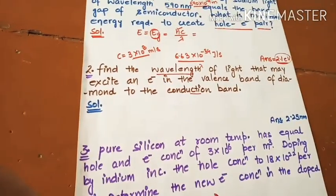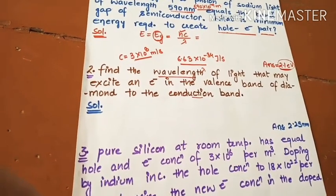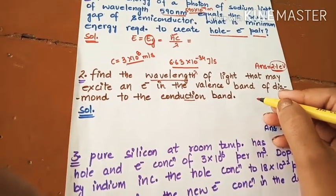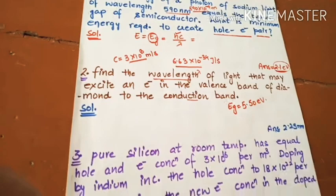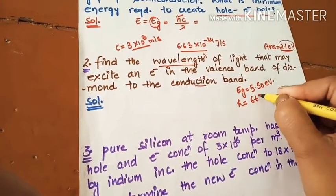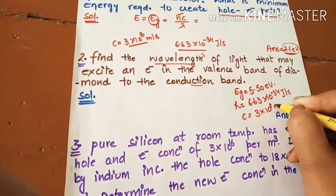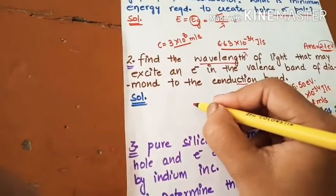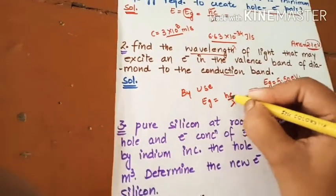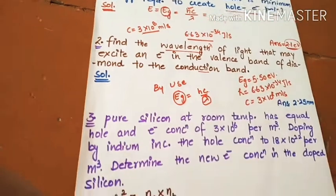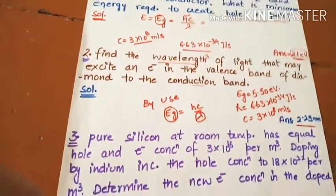EG is equal to 5.50 electron volts. H is equal to 6.63 into 10 power minus 34 joule per second. C is 3 into 10 power 8 meter per second. By using this formula, EG is equal to HC upon lambda. You will find out the wavelength, which is 225 nanometer.